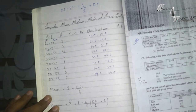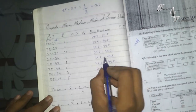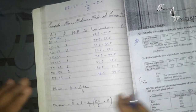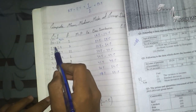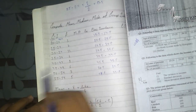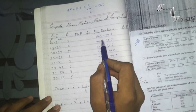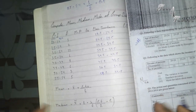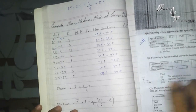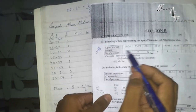Why do we need to make class boundaries? Just to eliminate the difference between class intervals. Like here there was a difference of 1, but now you can see there is no difference between the numbers — the boundaries are continuous.